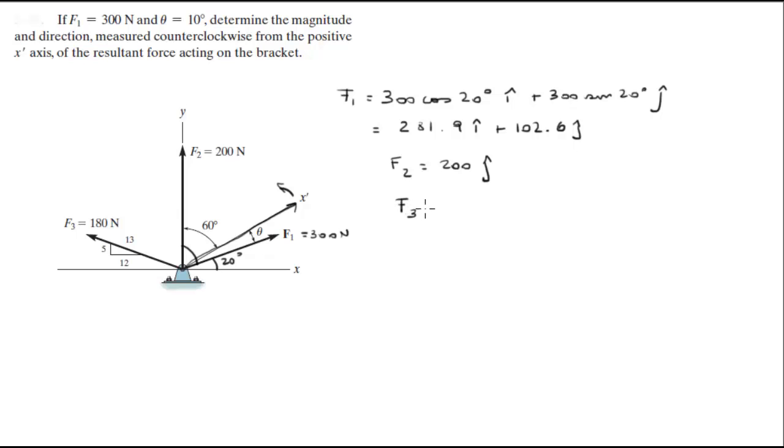F3 is equal to negative 180 times 12 over 13 i plus 180 times 5 over 13 j. And when you calculate this you get negative 166.15 i plus 69.23 j.